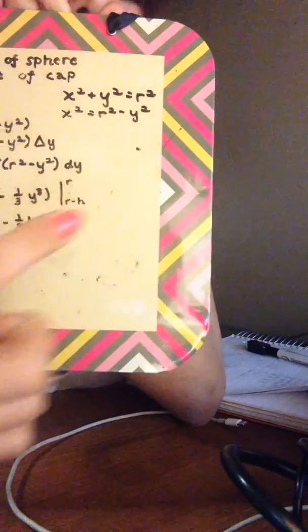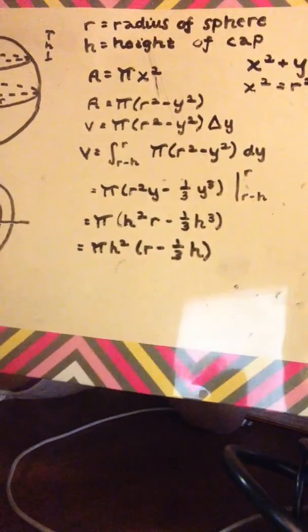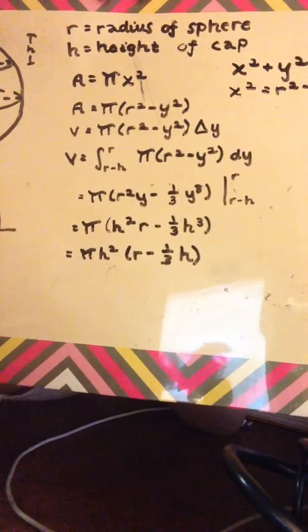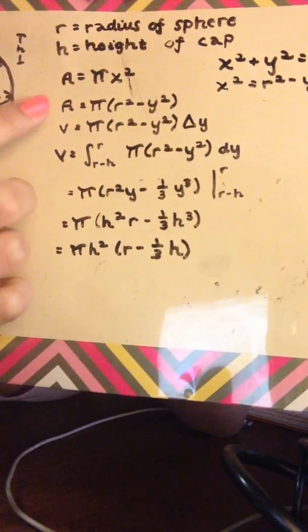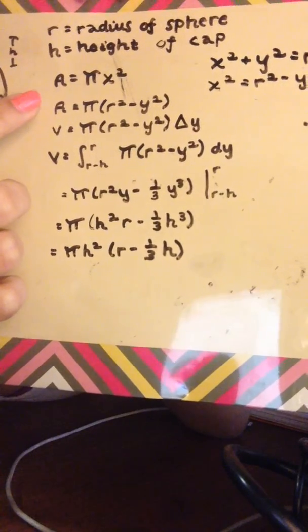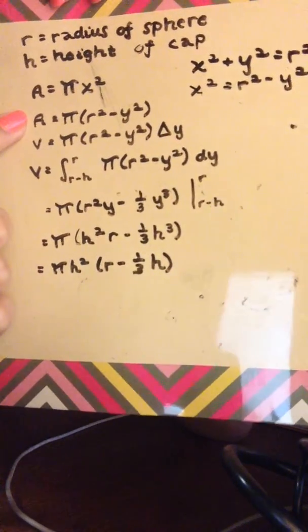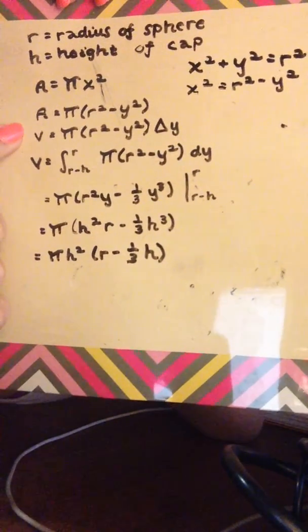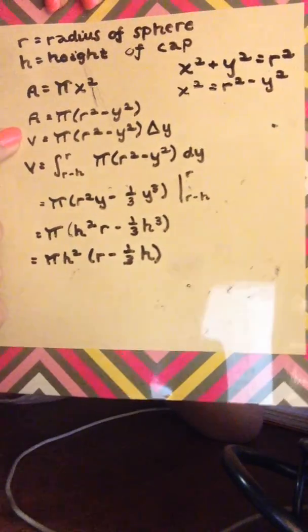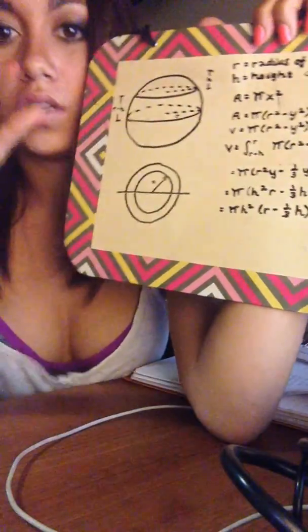Then you can plug that in for x in your area formula. And then to find the volume of the cap, you're going to take that area, multiply it by the change in y, which is dy.